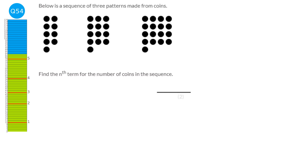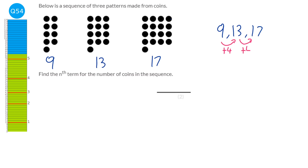We convert the pattern into numbers by counting dots: the sequence is 9, 13, 17. We're adding 4 each time, so our sequence involves 4n. We go backwards one step to find the zeroth term: 9 take away 4 is 5. The zeroth term tells us what to add on to the 4n. So 4n plus 5 is our answer.